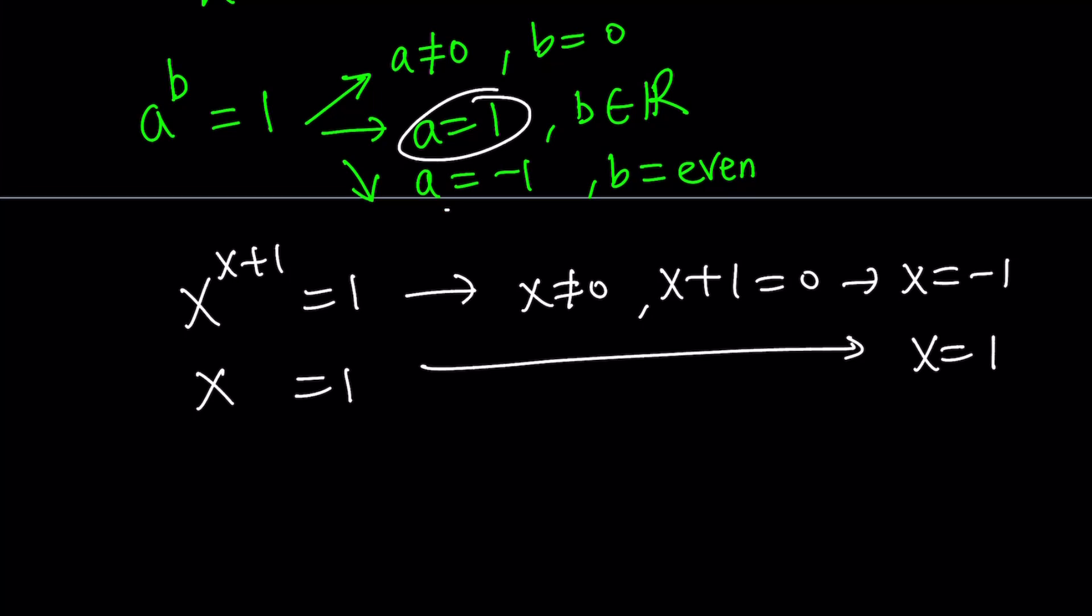What about the third scenario? a can be negative 1, the base. By the way, I could use b for base, but it doesn't matter. So x could be negative 1 and x plus 1 has to be even.